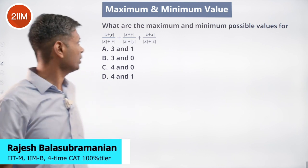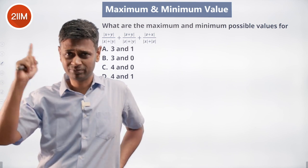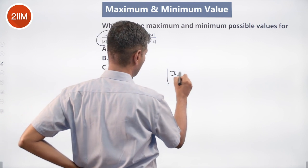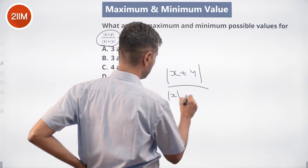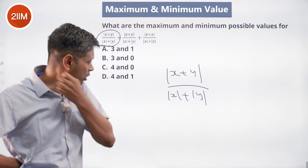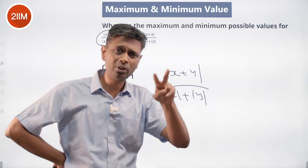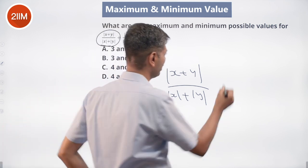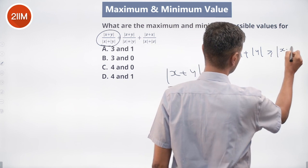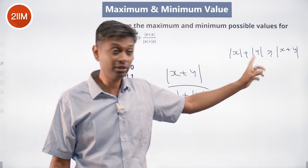Beautiful question. What are the maximum and minimum possible values for this expression? First, let's think about what each term can go to — maximum and minimum. So modulus of x plus y, divided by mod x plus mod y. We know that mod x plus mod y means we're adding the two magnitudes, whereas modulus of x plus y means we're adding the two numbers and then taking the magnitude.